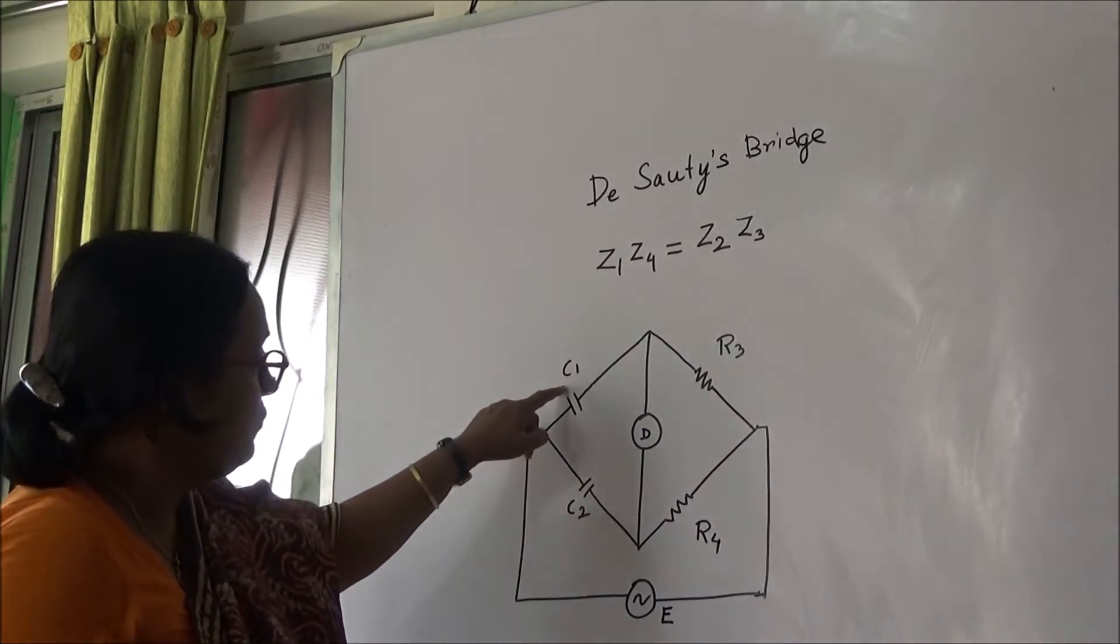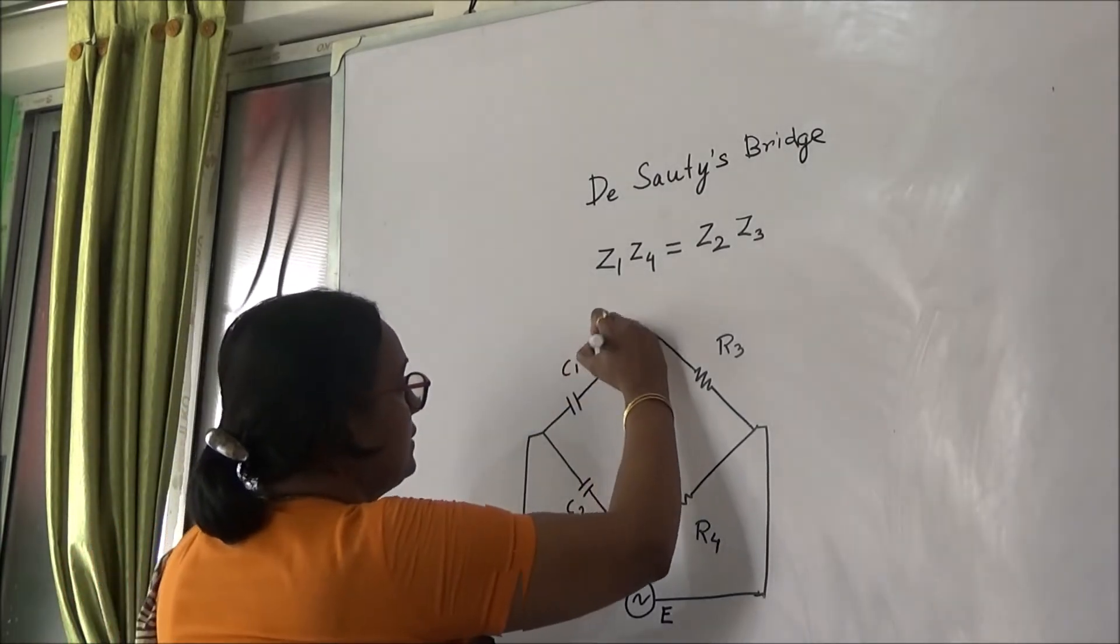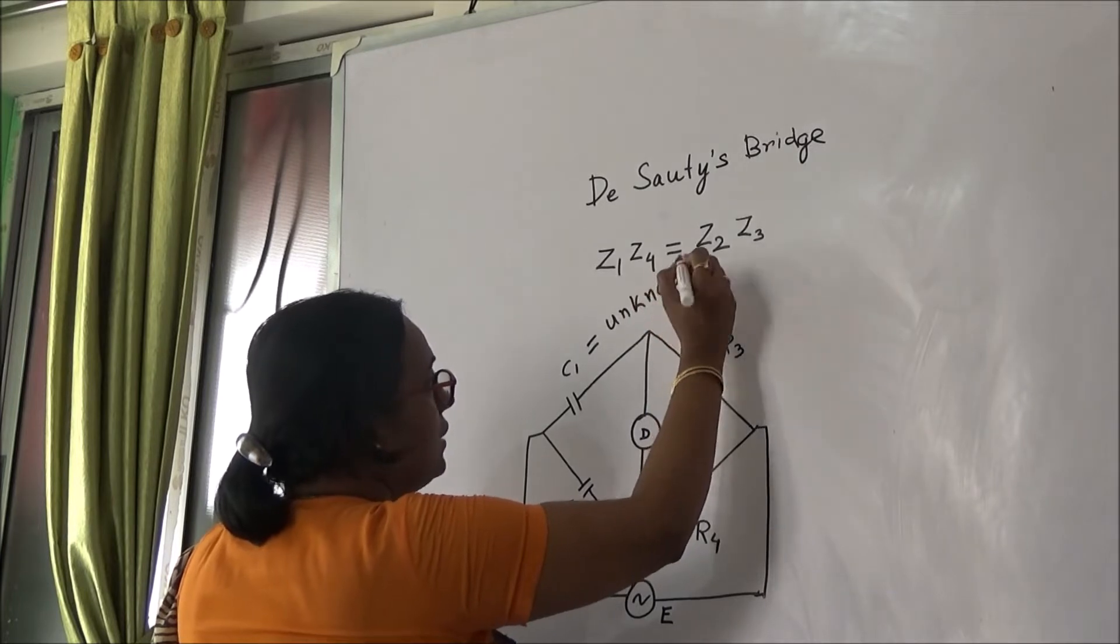What is Z1? Here we can see only one capacitance is connected and this capacitance is the unknown capacitance.